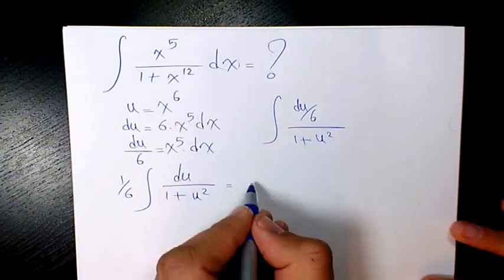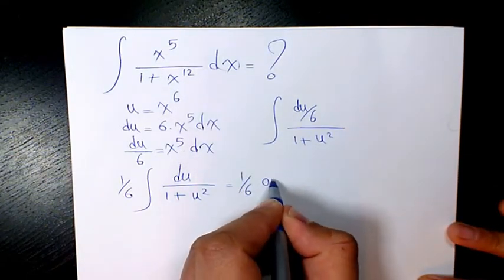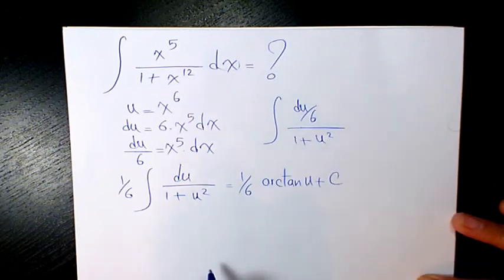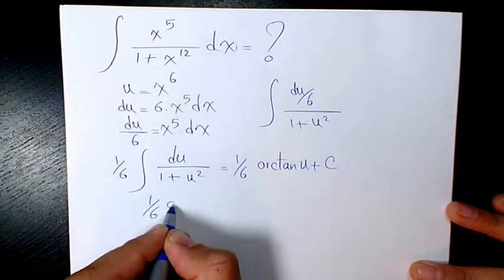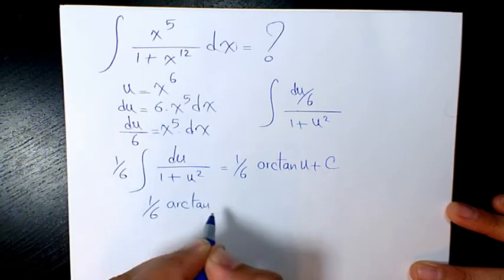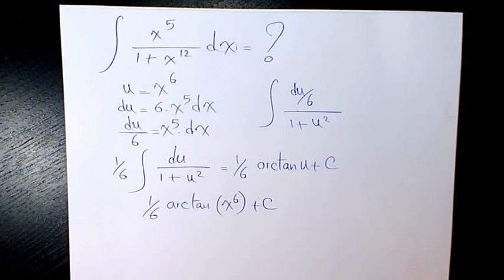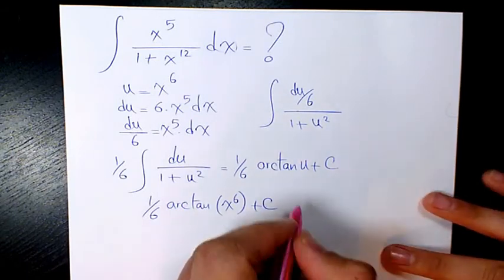And when you integrate it, it will be 1 over 6 arctan u plus c. Then I have 1 over 6 arctan x to the power of 6 plus a constant number. So this is the final answer.